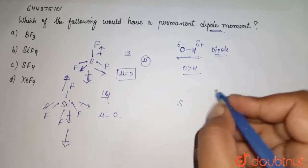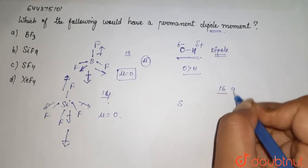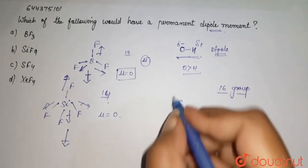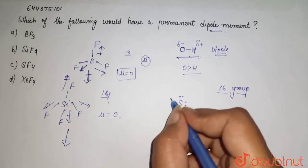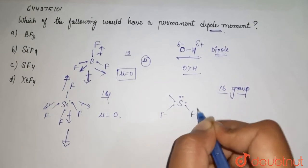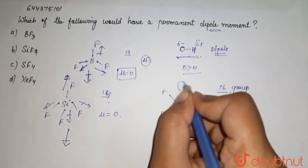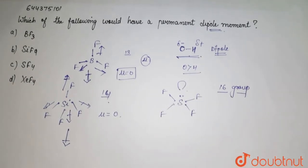Then we have SF4. Sulfur belongs to group 16, the oxygen family, so it has six valence electrons: one, two, three, four, five, and six. Your four fluorine atoms are two, three, and four, with a lone pair.